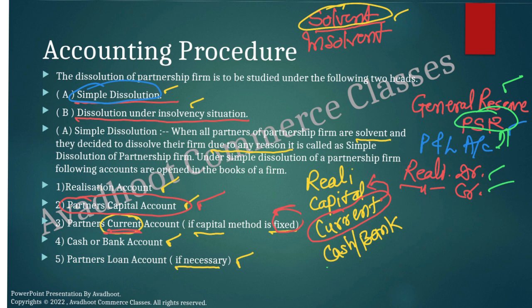The other part is when a particular partner becomes insolvent. In the book, you can see: one partner insolvent, two partners insolvent, or all other partners insolvent. Today we are going to consider when one partner becomes insolvent. The other problems are solved the same way — there is no change; fluctuating capital is there, and we solve the problem as it is.